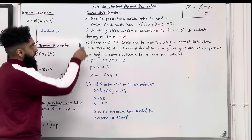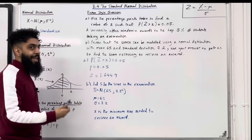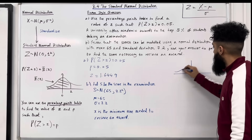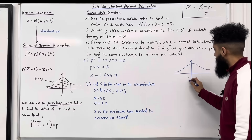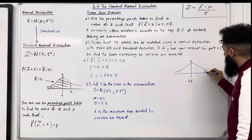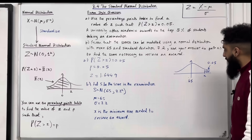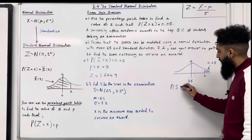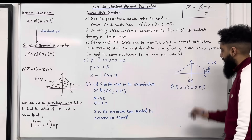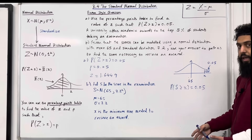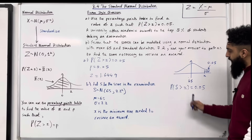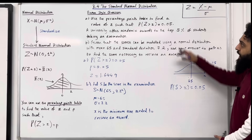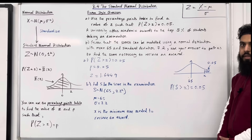The university offers awards to the top 5% of students, so we're looking at the top 5%. On the bell-shaped curve centered at the mean 65, the area to the right of x equals 0.05. So probability S is greater than x equals 0.05. Since we have a normal distribution, the equal sign contributes zero area and can be dropped. To use the answer from part A, we standardize: probability of (S minus 65) over 7.2 is greater than (x minus 65) over 7.2, equals 0.05. The left-hand side represents capital Z, and we can call the fraction on the right lowercase z, giving probability capital Z is greater than lowercase z equals 0.05 — matching part A.